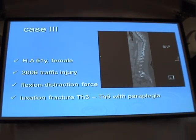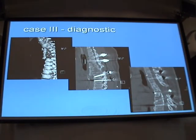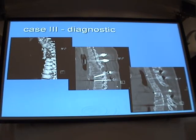Case number 3: a 51-year-old female with a 2030 flexion-distraction injury. There was a comminuted fracture at TH3–TH6 with paraplegia. We stabilized this fracture with our colleague Dr. Hanig using dorsal destabilization. However, the ventral fragment of the fracture was still dislocated, so Dr. Hanig performed a procedure around the spine and reduced the ventral part.